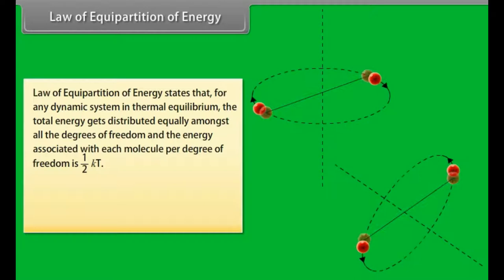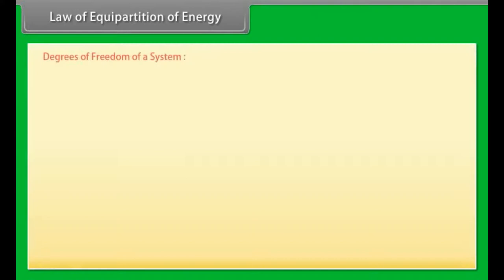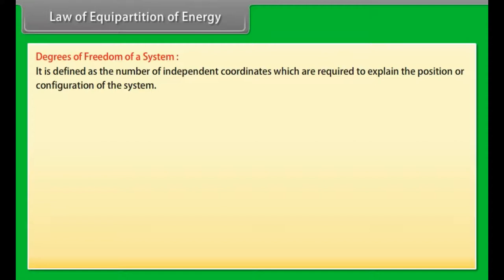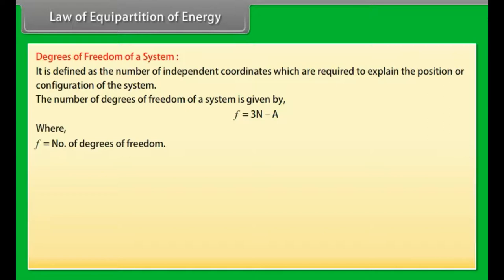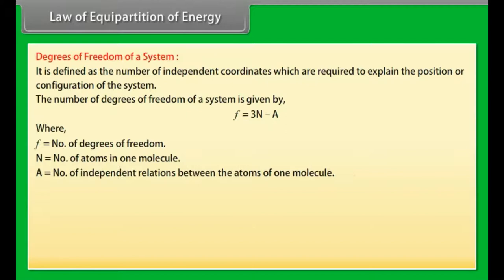Law of equipartition of energy states that for any dynamic system in thermal equilibrium, the total energy gets distributed equally amongst all the degrees of freedom, and the energy associated with each molecule per degree of freedom is ½KT, where K equals Boltzmann's constant and T equals absolute temperature of the system. Degree of freedom of a system is defined as the number of independent coordinates which are required to explain the position or configuration of the system. The number of degrees of freedom of a system is given by F equals 3N minus A, where F equals number of degrees of freedom, N equals number of atoms in one molecule, A equals number of independent relations between the atoms of one molecule.